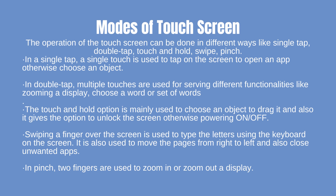Modes of touchscreen: The operation of the touchscreen can be done in different ways like single tap, double tap, touch and hold, swipe, and pinch. A single touch is used to tap on the screen to open an app or choose an object. In double tap, multiple touches are used for serving different functionalities like zooming a display or choosing a word or set of words.